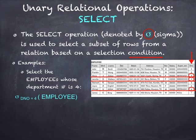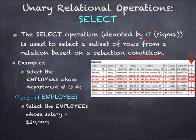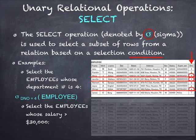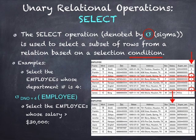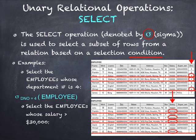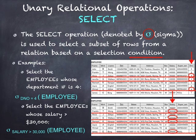Another example: select the employees whose salary is greater than 30,000. On the same employee schema, the result will show the salary attribute and will retrieve all records or rows that have a salary greater than 30,000.